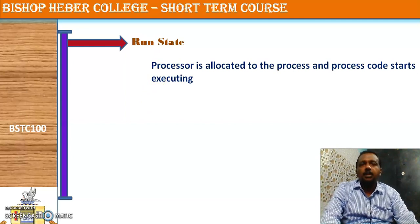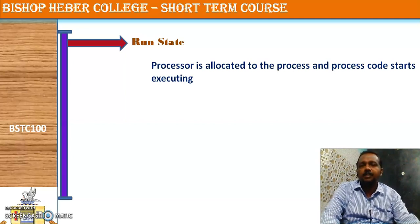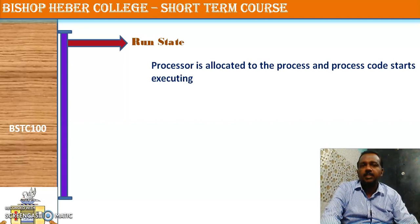In a multiprogrammed environment, the computer normally has only one processor, so there will be only one process in the run state at a time. Other states may have a list of processes — many processes may be waiting in the ready list, some may be in hold, some may be in wait. Only one process can be in the run state.